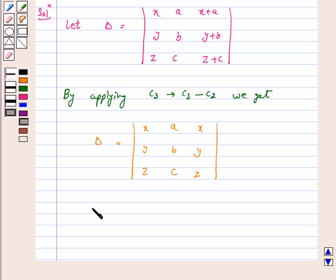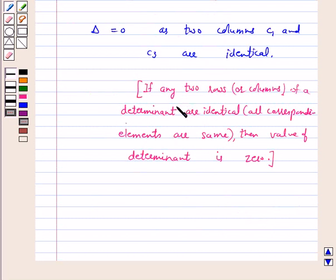Now delta equals 0 as two columns, c1 and c3, are identical. We have the property that if any two rows or columns of a determinant are identical, that is all corresponding elements are the same, then the value of the determinant is 0.